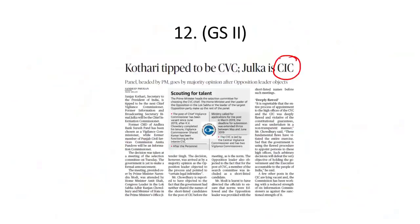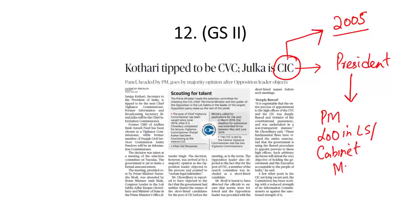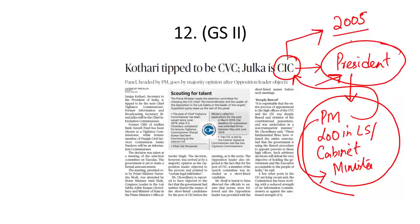The Office of the Chief Information Commissioner was constituted in 2005. The CIC is also appointed by the President based on the recommendation of a high-powered committee headed by the Prime Minister, with the Leader of Opposition in Lok Sabha and a Cabinet Minister nominated by the Prime Minister as members. This committee recommends the CIC name to the President.